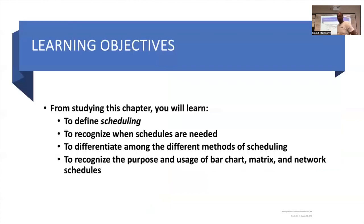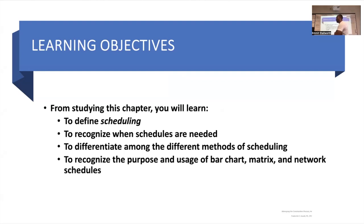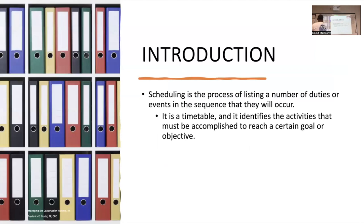Scheduling is the process of listing duties or events in the sequence they will occur. It identifies the activities that must be accomplished to reach a goal or objective. You're going to define scheduling, recognize what schedules are needed, differentiate among methods of scheduling, and understand the purpose of bar charts, matrix schedules, and network schedules.